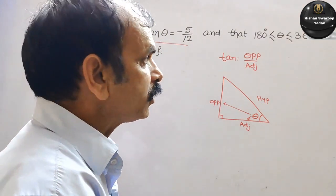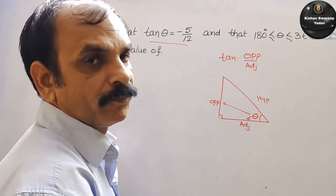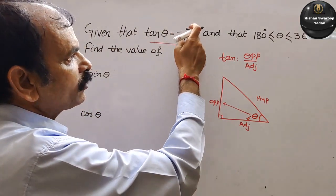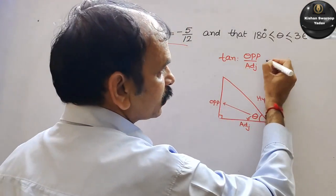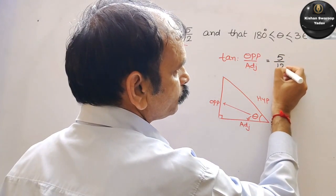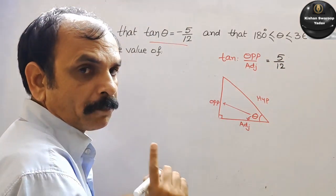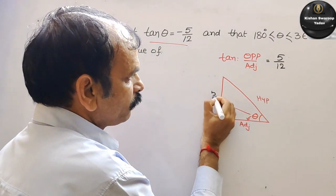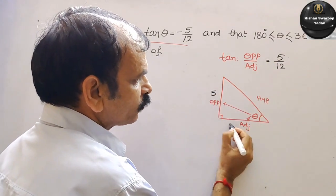Now what they have told, tan theta is opposite by adjacent that is equal to minus 5 by 12. So here simply we will write 5 by 12, not minus. Now the opposite is 5 and the adjacent is 12.